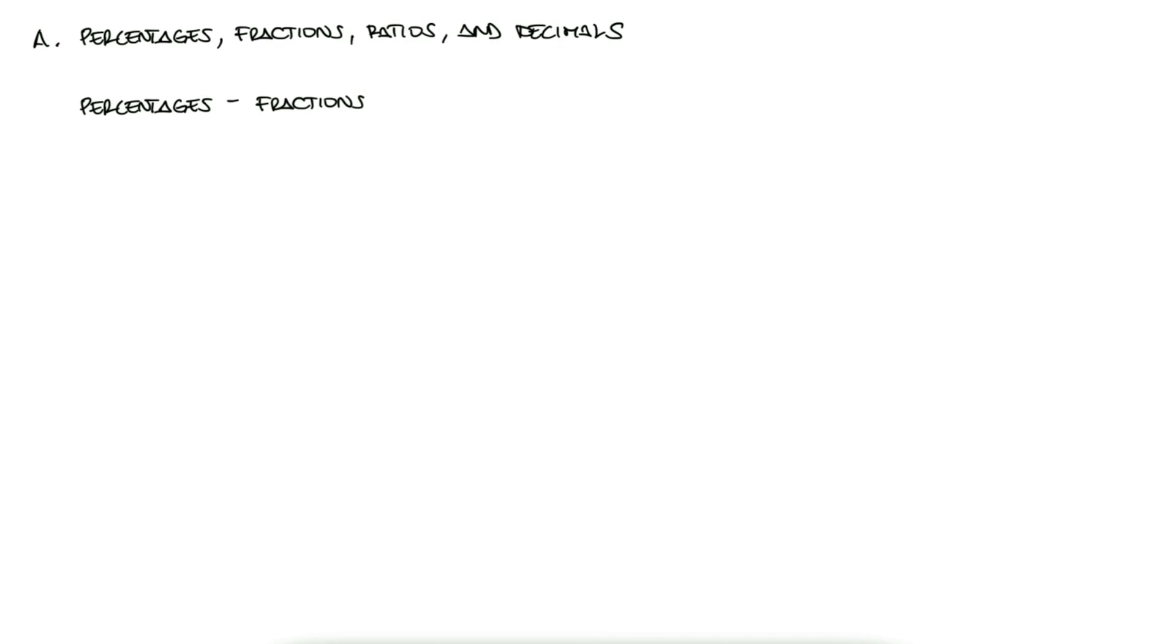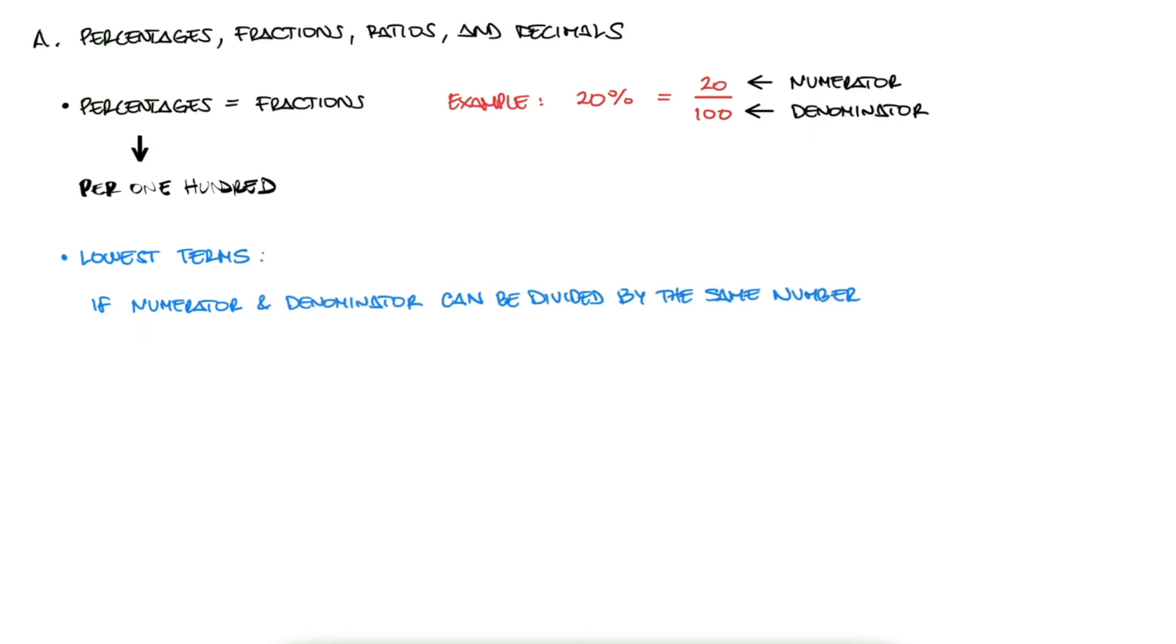Percentages are in essence just fractions. The word percentage means per every 100. Therefore, something like 20 percent is just 20 over 100. Usually, answer choices given in fractions are always presented in lowest terms. This means that if the numerator and the denominator can both be divided by the same number without yielding a decimal, the fraction is still not in lowest terms.